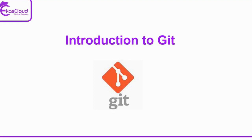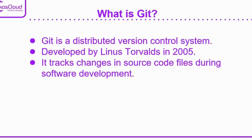First, we can see what is Git. Git is the distributed version controlling system. This is one type of version controlling system. It can record the history of projects and save the changes happening in that project. It helps to work in a collaborative way. It was developed by Linus Torvalds in 2005, a Finnish-American software engineer best known for creating the Linux kernel, the core of the Linux operating system. This skill helps to track changes in source code files during software development.